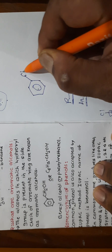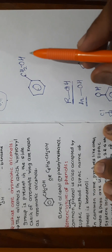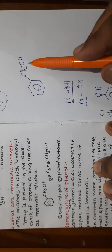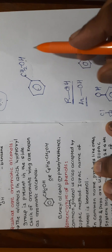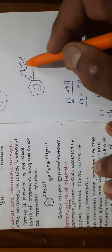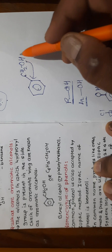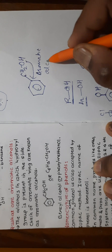If the OH group is directly attached to the benzene ring, it is a phenol. But if it is attached through a carbon chain — for example, C6H5-CH2-OH — it is not a phenol; it is an aromatic alcohol. So OH directly on the benzene ring gives phenol, and OH in the side chain gives aromatic alcohols.